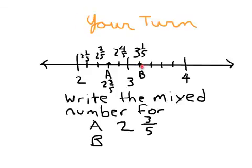I'll just talk them out though. 3 and 2 fifths, 3 and 3 fifths, 3 and 4 fifths, 4. So again, the mixed number for point B written right here is 3 and 1 fifth, where we have that whole and then that fractional part.